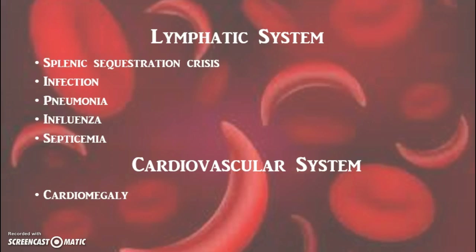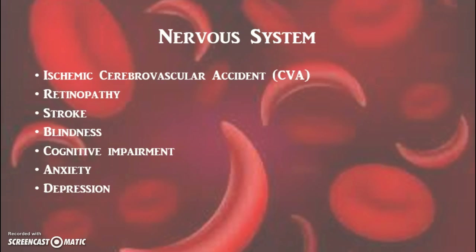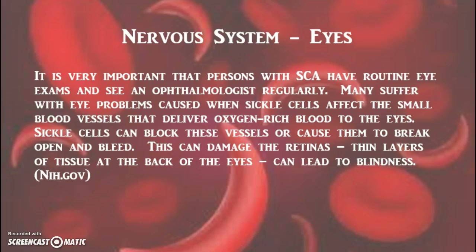Persons with sickle cell anemia also face the possibility of developing cardiomegaly, an enlarged heart. Some possible effects of sickle cell anemia to the nervous system include stroke, blindness, and cognitive impairment, even anxiety and depression. Because of the small blood vessels required to deliver oxygen to the eyes, sickled red blood cells can cause these blood vessels to break open and cause bleeding, which can consequently lead to blindness.